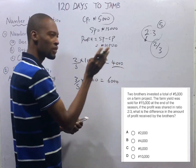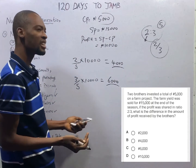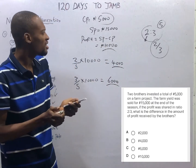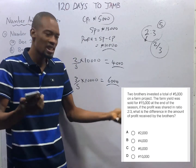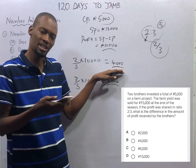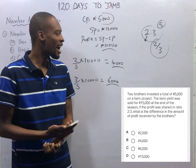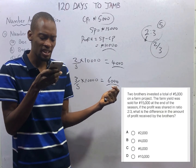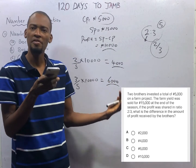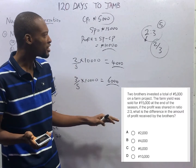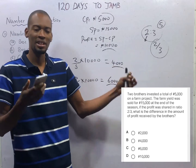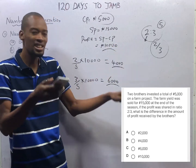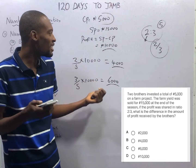The first person got 4,000 naira, the second one got 6,000 naira. The beauty of ratio is that when you add the two, you get exactly 10,000 naira — the amount they shared. The question asks for the difference in profit received. Difference simply means minus: 6,000 naira minus 4,000 naira equals 2,000 naira. That is the difference in profit, and that leaves option A as the correct option.